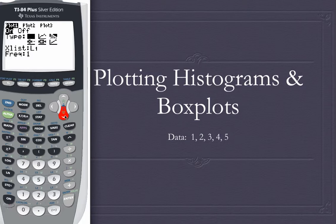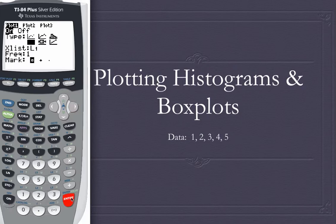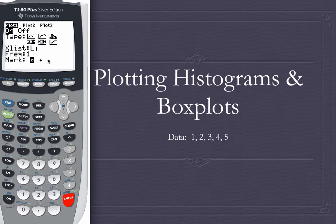Scroll to type, but instead of scrolling down — which would send us to L1 — scroll back up and then scroll to the right until you get to that second row. Keep scrolling right to get to the second row, highlight the modified box plot, and press enter. Now I still have X list and frequency, but also a mark option. My X list is L1, frequency is 1, and I'm okay with this mark — I like the bigger mark over the tiny dot, but it doesn't really matter which mark you use. What does matter is that you have the right list, right frequency, right type selected, and that your plot is on.